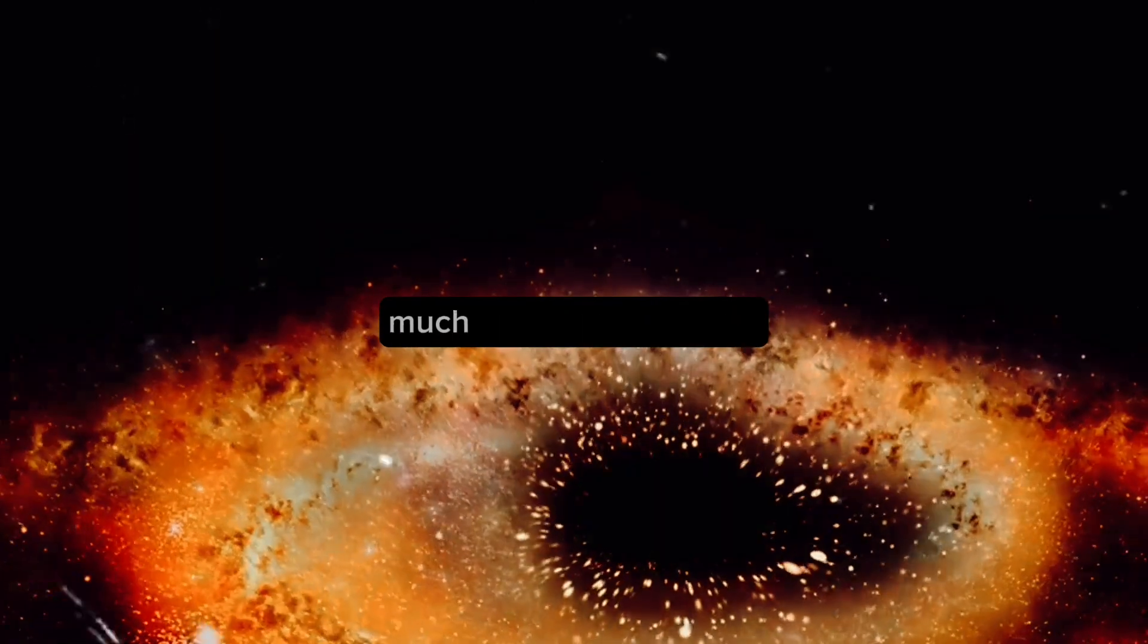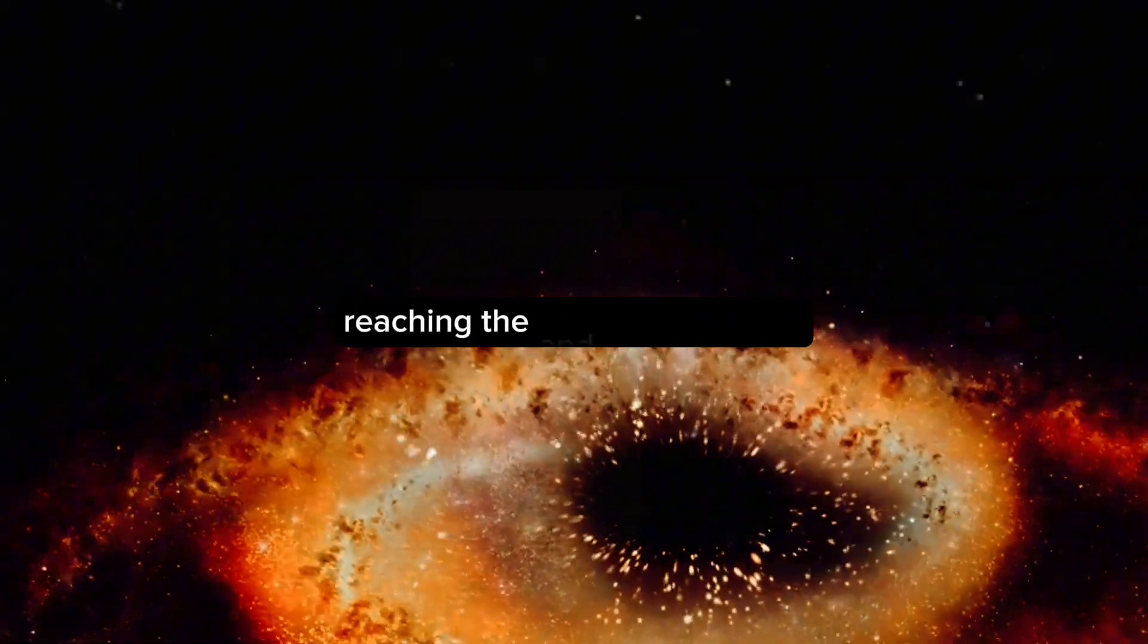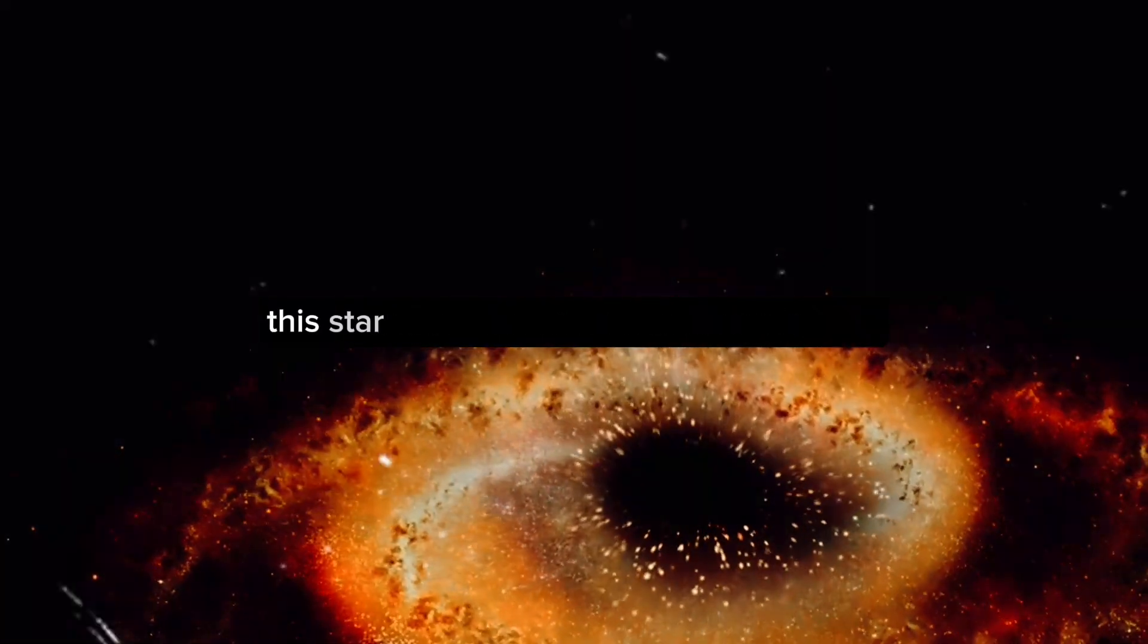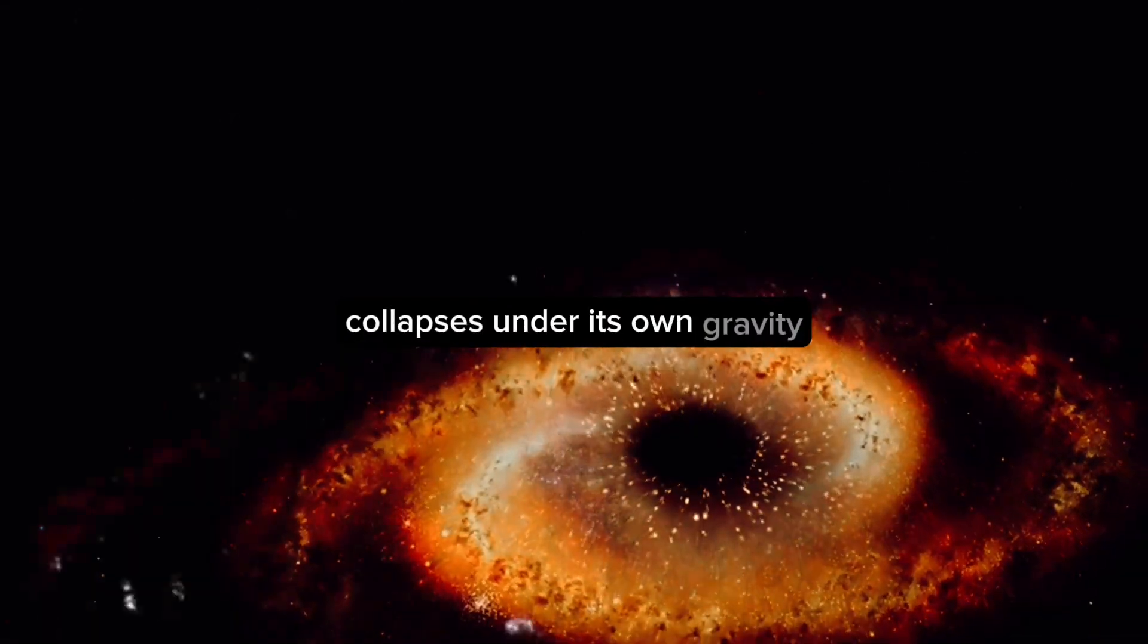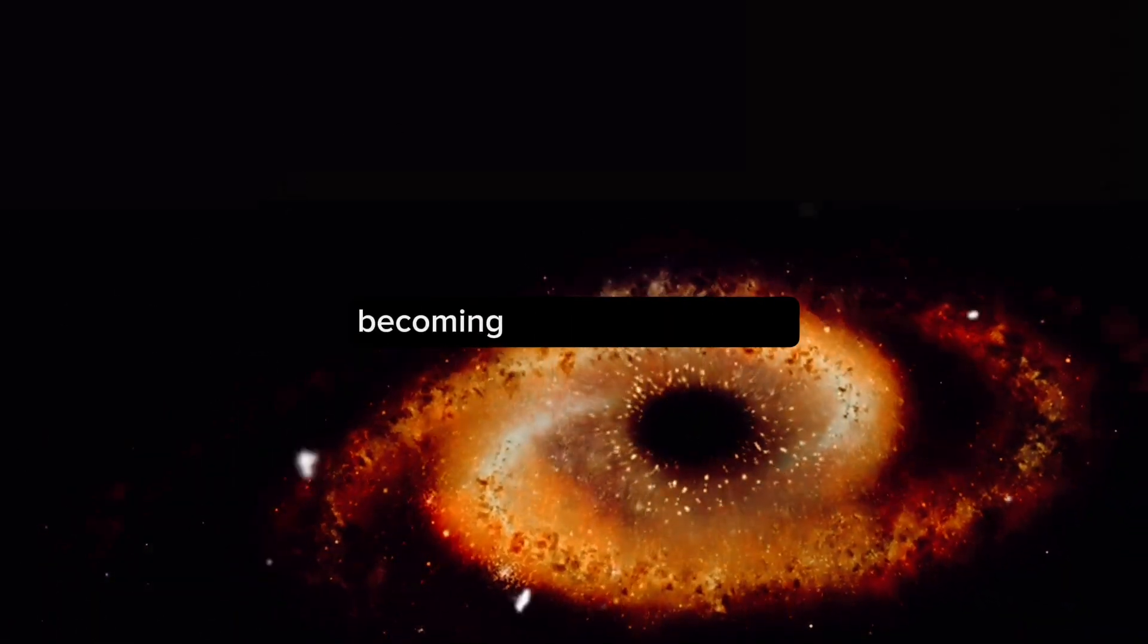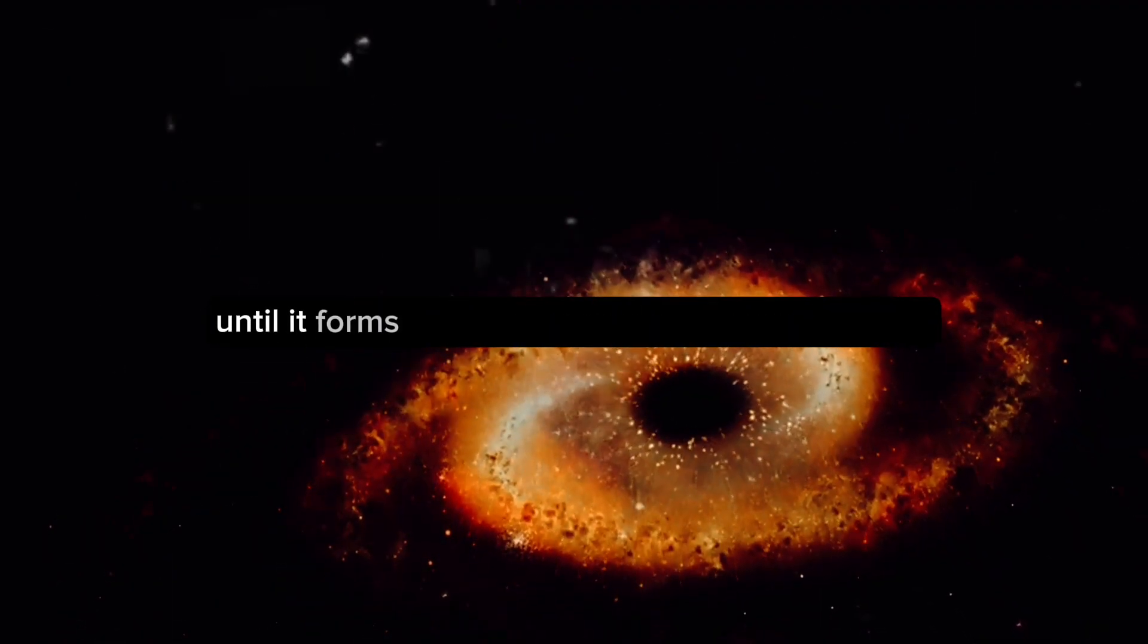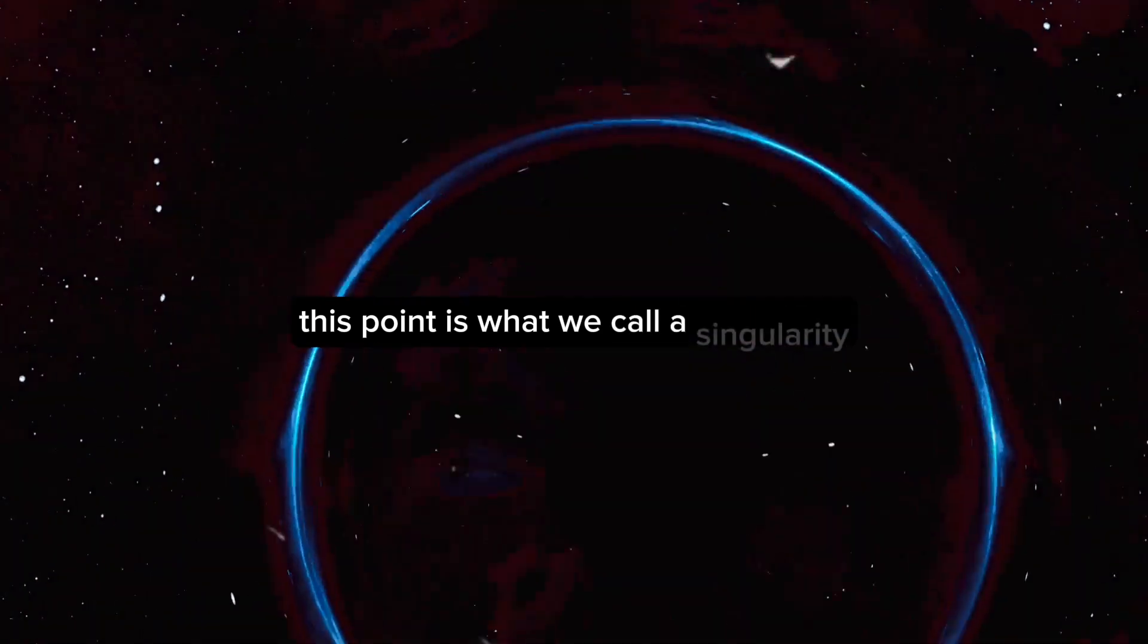Picture a massive star much larger than our sun, reaching the end of its life cycle. This star, having exhausted its nuclear fuel, collapses under its own gravity. As it does, it shrinks, becoming denser and denser, until it forms a tiny point with an enormous mass. This point is what we call a singularity.